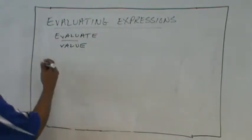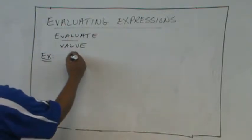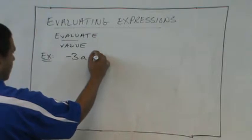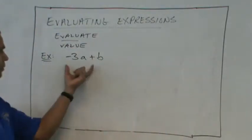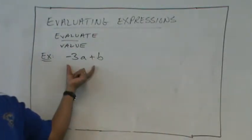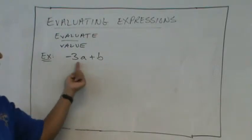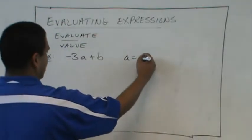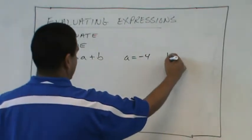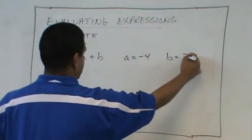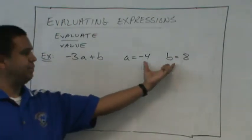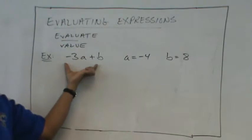And let's look at an example. Let's say we have negative 3A plus B. So this is our expression. This is our algebraic expression. And let's say that A is negative 4 and B is 8. Okay. So for these values, tell me what is the value of this expression. So we're going to evaluate it.